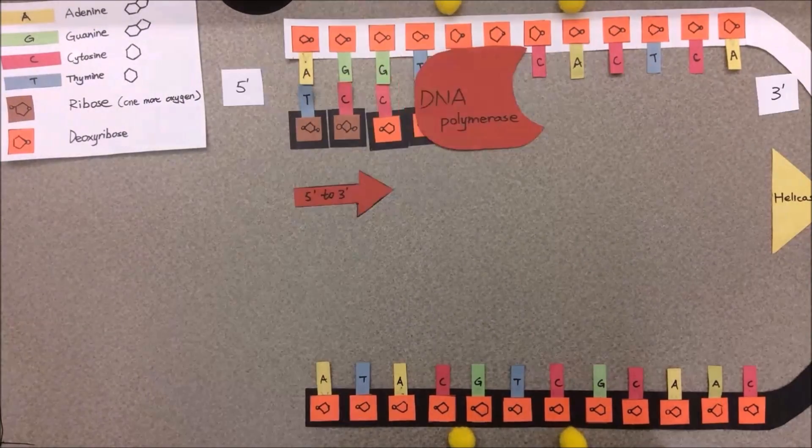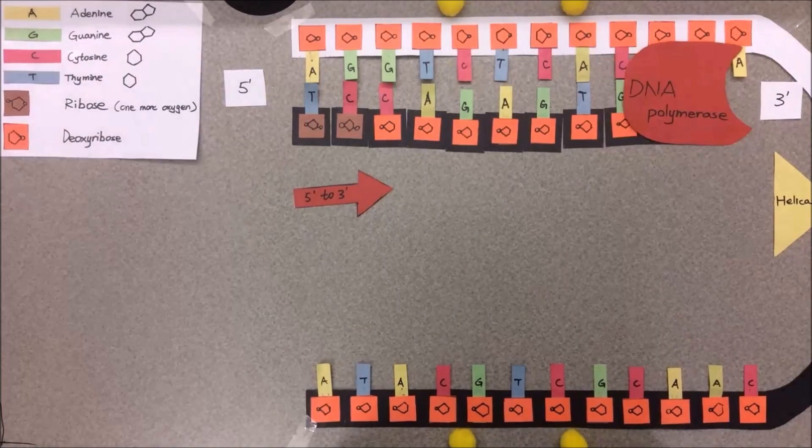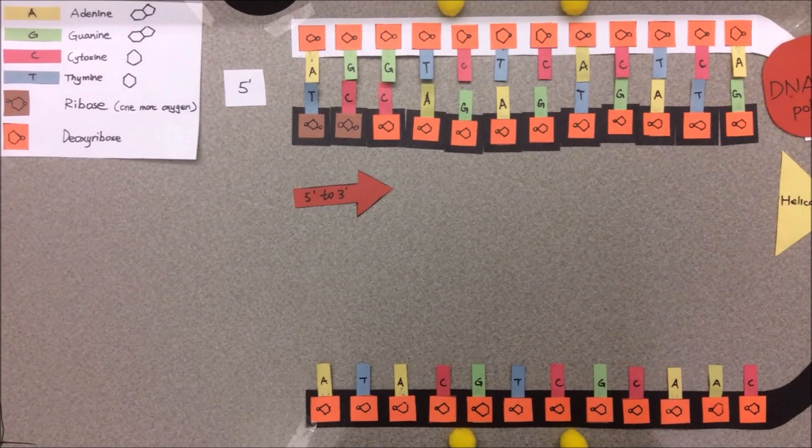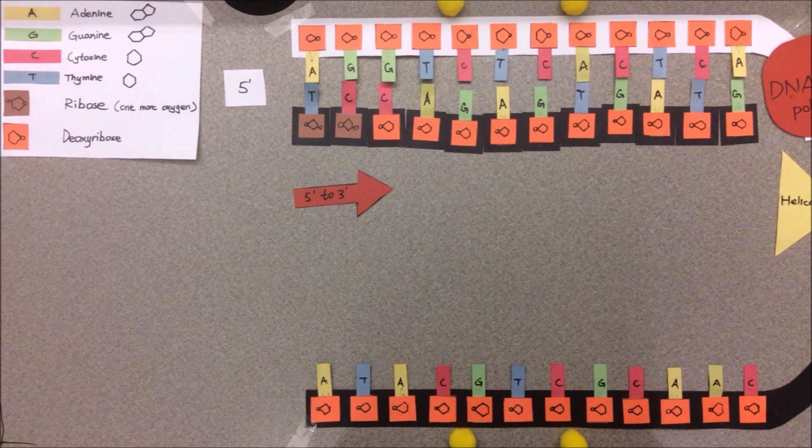Since DNA replication moves along the parent strand in the 5' to 3' direction, replication can occur very easily on the leading strand. The nucleotides are added in the 5' to 3' direction as a result.